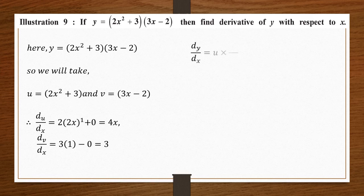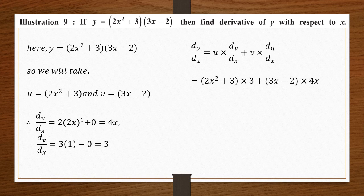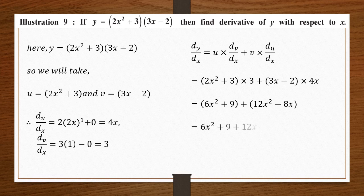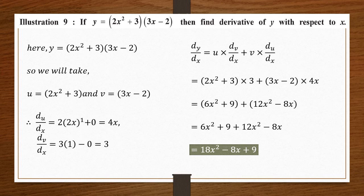Putting into the formula dy/dx equals u times dv/dx plus v times du/dx: we get (2x squared plus 3) times 3 plus (3x minus 2) times 4x. Expanding: 2x squared times 3 gives 6x squared plus 9, and (3x minus 2) times 4x gives 12x squared minus 8x. Combining like terms: 6x squared plus 12x squared is 18x squared, so the final answer is 18x squared minus 8x plus 9.